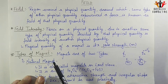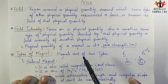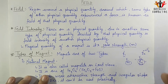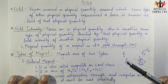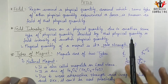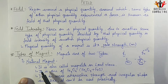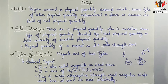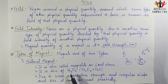The next topic is types of magnets. Magnets are generally of two types: natural and artificial. A natural magnet is also called magnetite or lodestone. It is an ore of Fe3O4, which is an iron oxide known as magnetic oxide of iron.